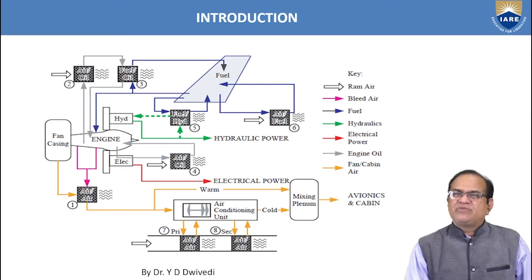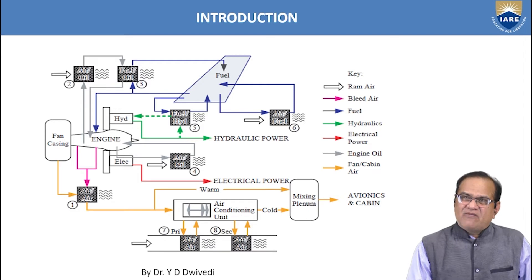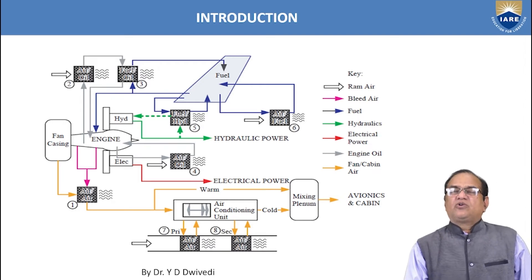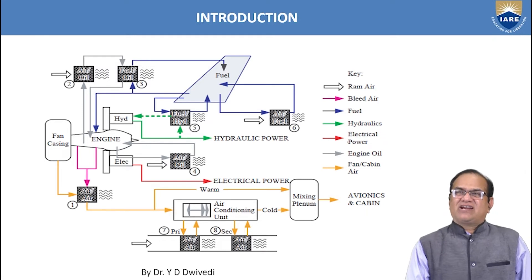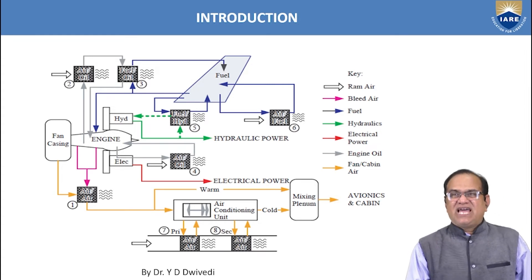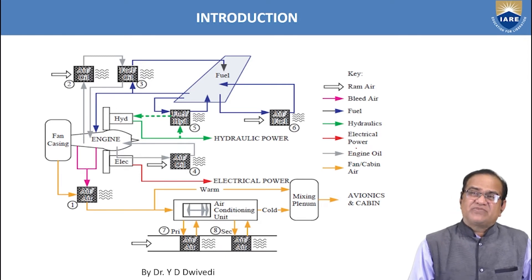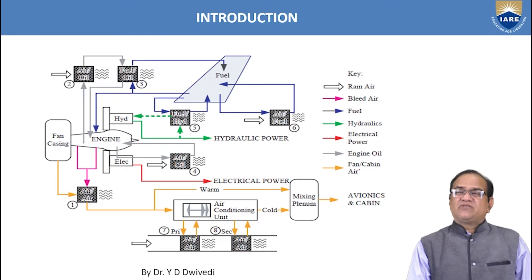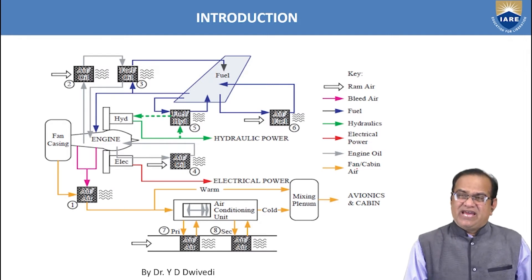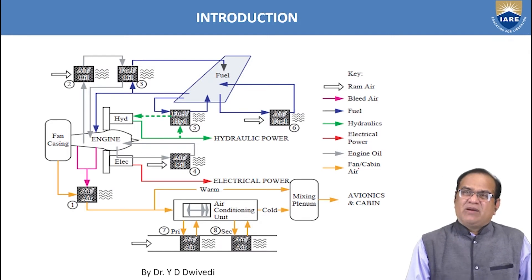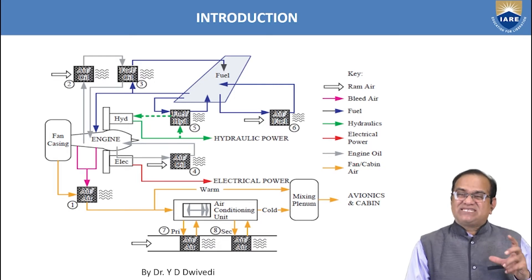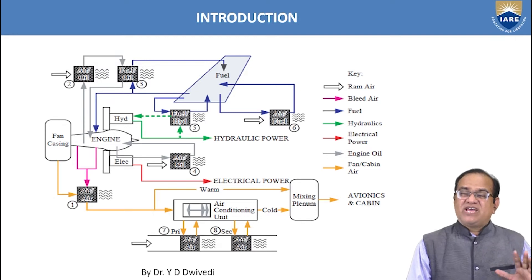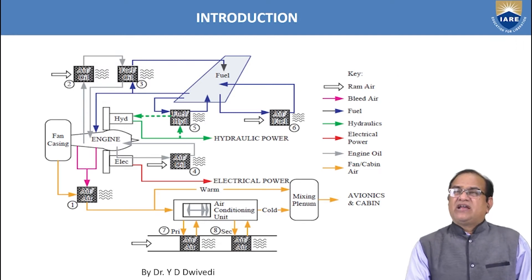The hydraulic system operates all these equipments. Electrical power supplies current and power for avionics and all electrical equipment fitted inside the aircraft, especially in the cockpit. Engine oil is used for cooling and lubrication of the bearings inside the engine. Fan cabin air ensures sufficient and precise air inside cruise liners where passengers and pilots sit, so they face no difficulty.